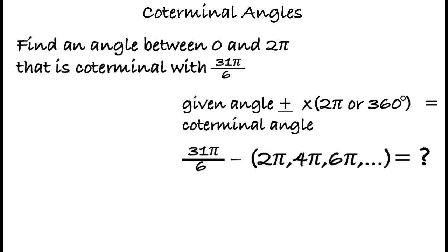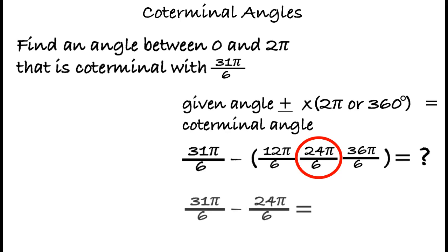And to find the amount we need to subtract, we can convert the multiples of 2 pi to have a denominator of 6, thus yielding 4 pi, or 24 pi over 6, as the closest multiple to the given angle without exceeding it. So by subtracting 24 pi over 6 from 31 pi over 6, we can yield our answer of 7 pi over 6 for the coterminal angle.